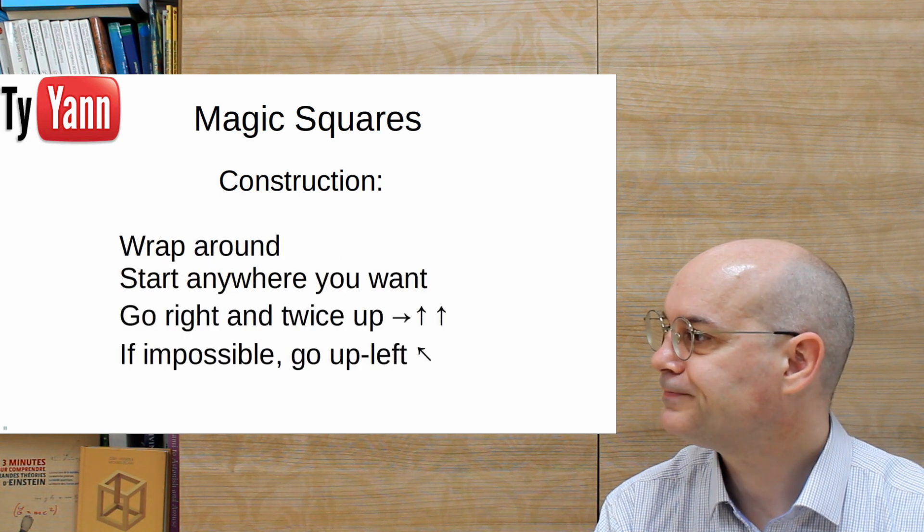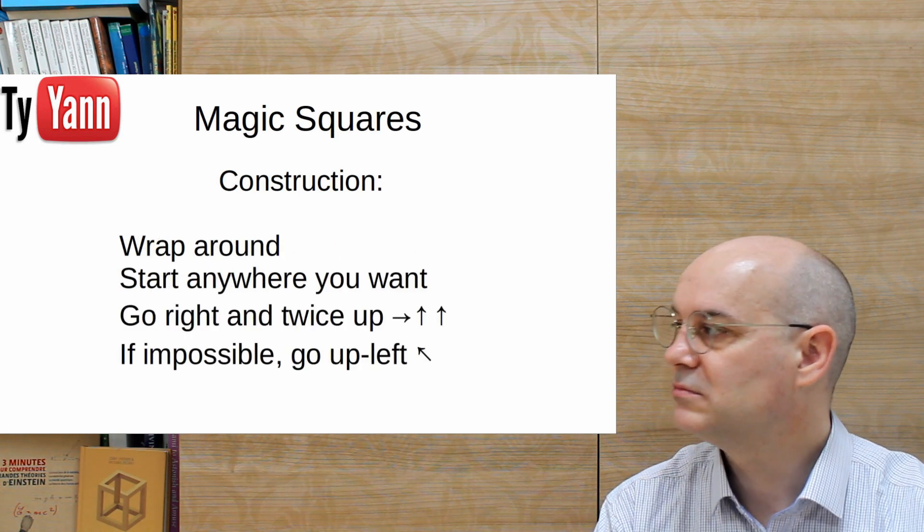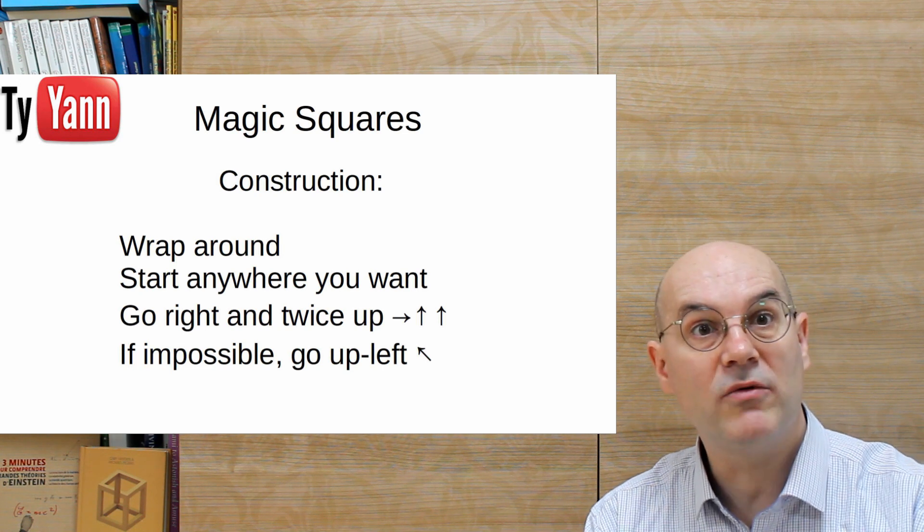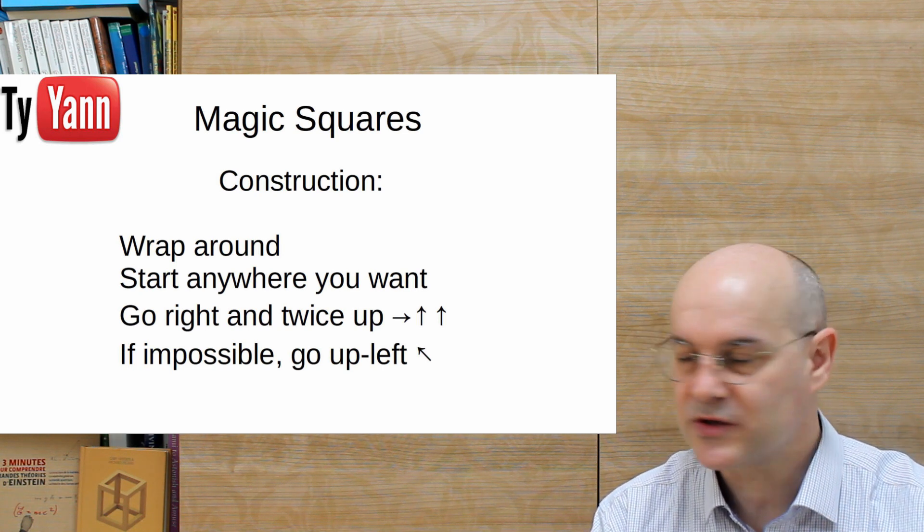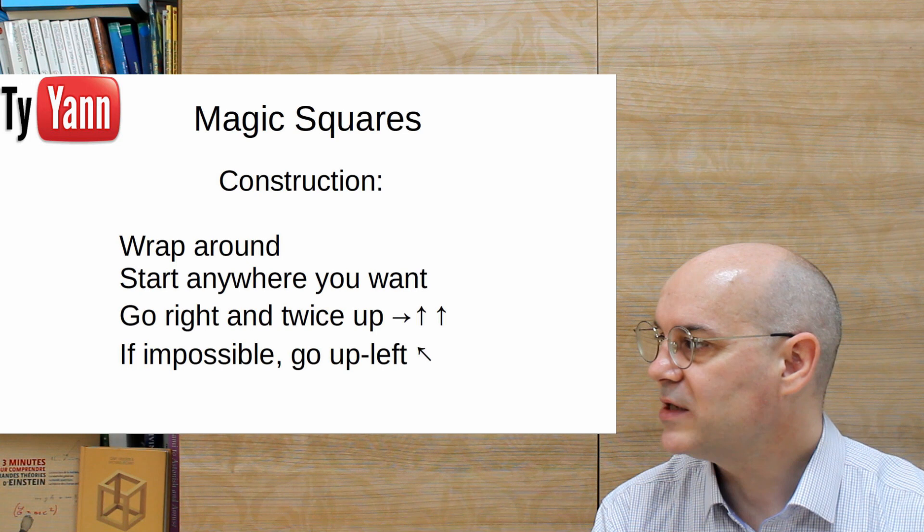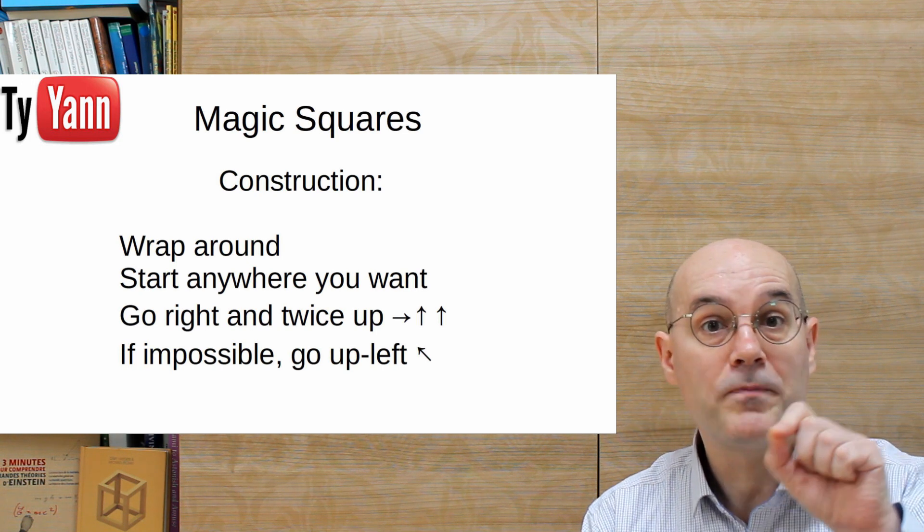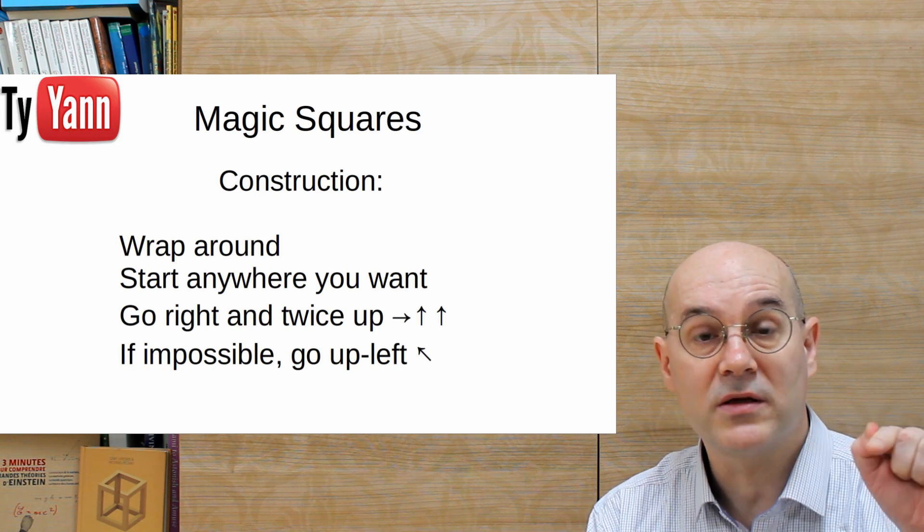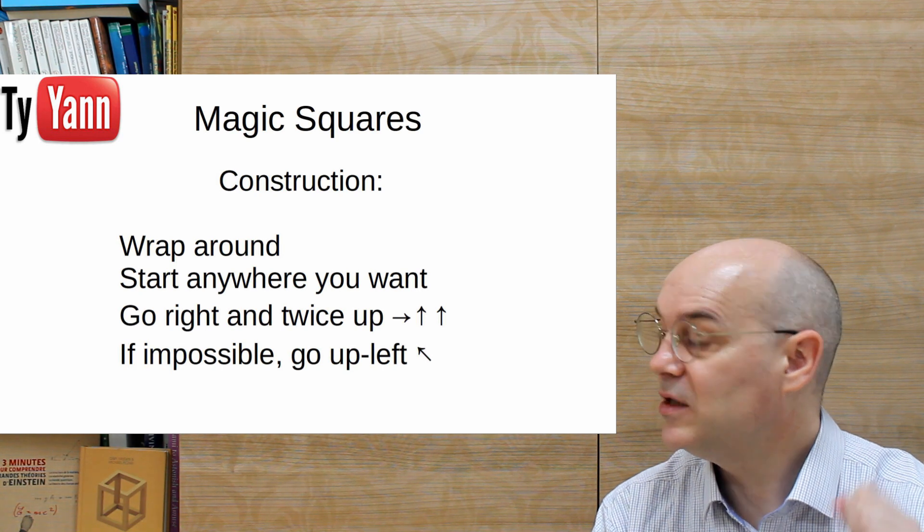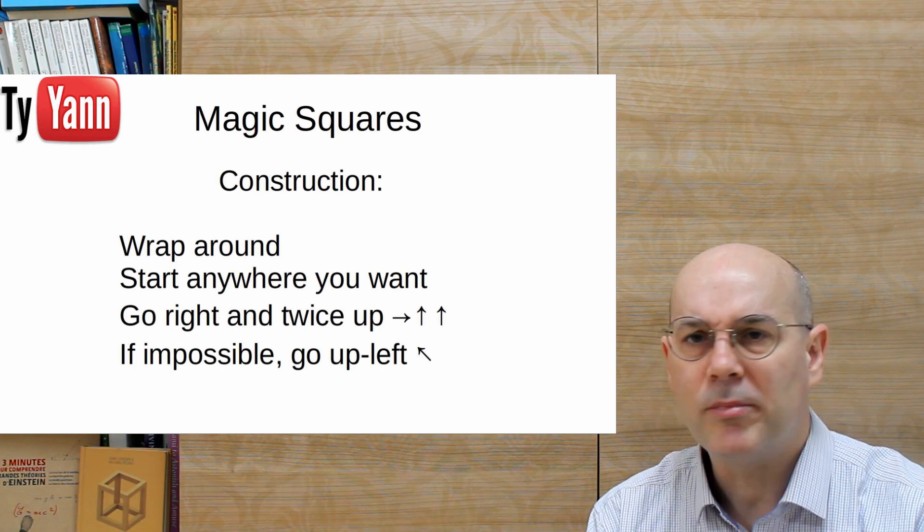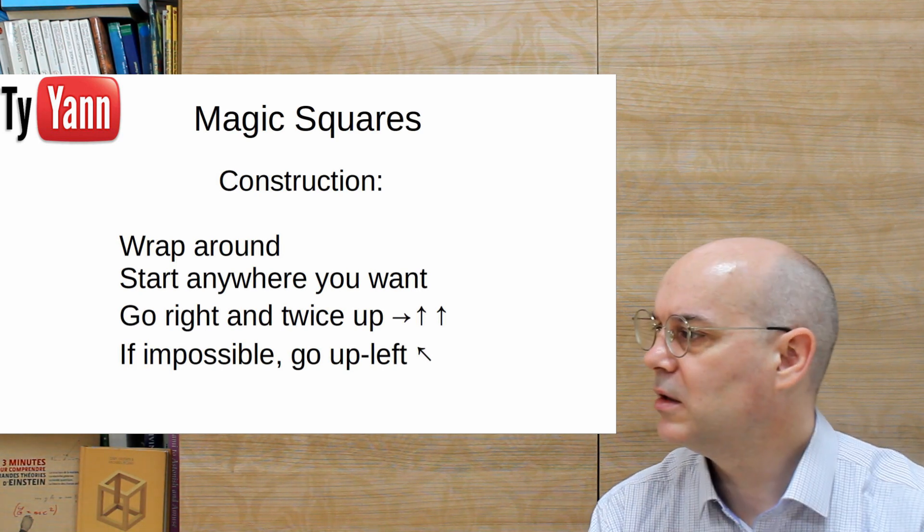There's an easy way to construct them. So we're going to build it, but this method only works with pan-magic squares. It's not going to work for the 3 by 3 square because there's no pan-magic square 3 by 3. But 5 by 5, there's one. So here's the method. Wrap around. You can start anywhere you want. That's a property of pan-magic squares. You go right and twice up, like a knight on a chessboard. And if you can't, you go up left.